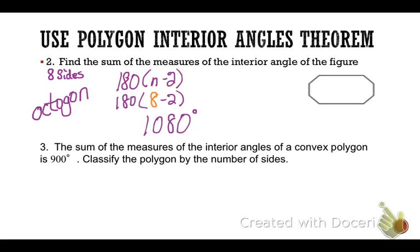The sum of the measures of the interior angles of a convex polygon is 900, classify the polygon by the number of sides. So here, I want to find the number of sides, and I've been given the interior degrees, but I'm still going to use my nifty formula.